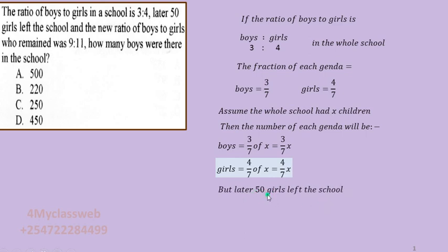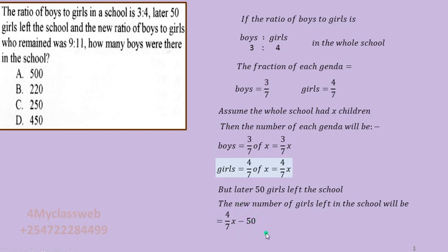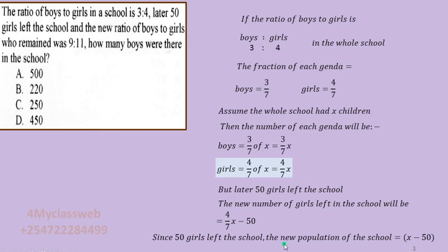We are told that 50 girls decided to leave the school. This changes the number of girls remaining in the school. The new number of girls left will be 4x/7 minus 50. Since 50 girls have left, the new total population will be x minus 50, and we will now work with x minus 50.